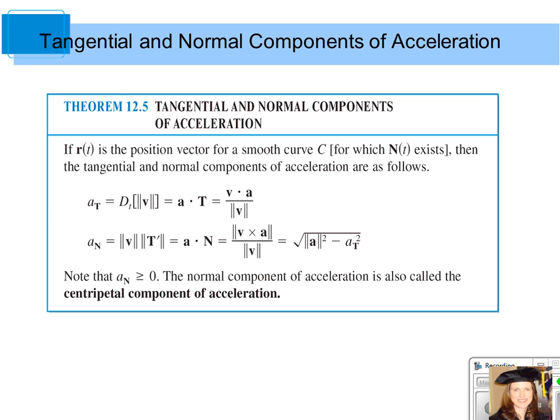There are a few different formulas for finding the normal component of acceleration as well. It's found by finding the magnitude of your velocity and the magnitude of the derivative of the unit tangent vector. That's also found by taking the dot product of the acceleration with the principal unit normal vector, and there are a few other formulas for those as well.